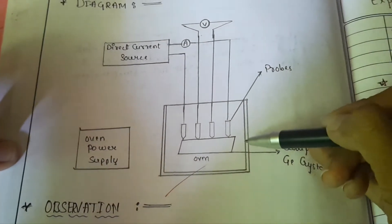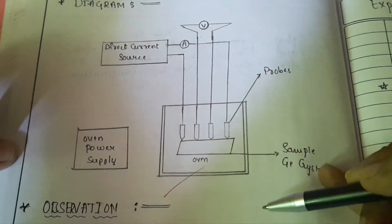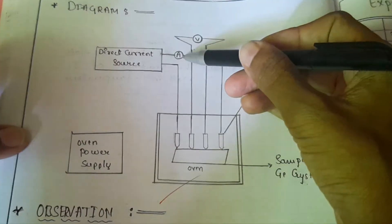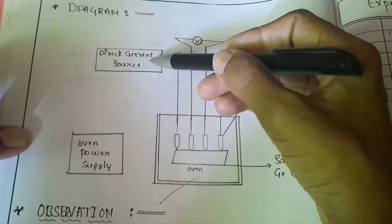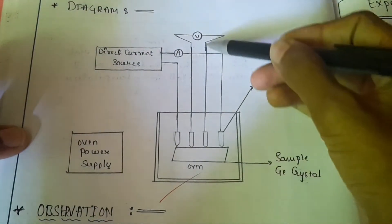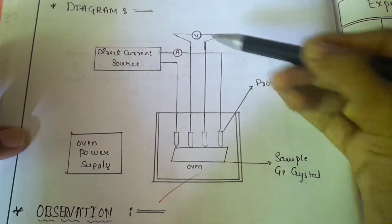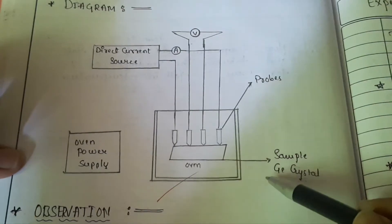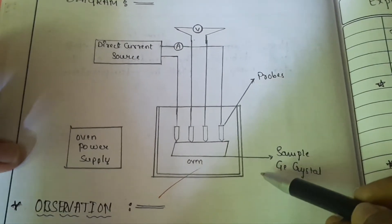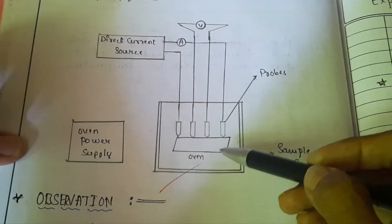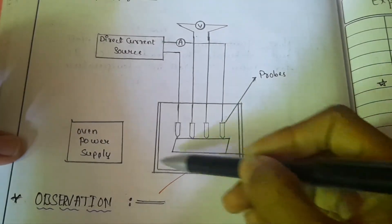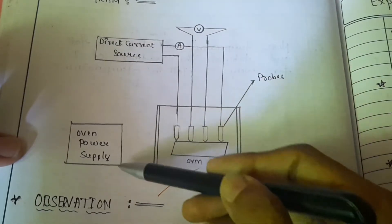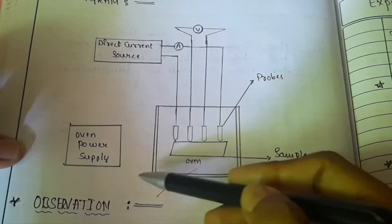This is the diagram for the 4-probe method. Here are the 4 probes. 2 probes are connected to ammeter, that is direct current source, and 2 probes are connected to the voltmeter. These 4 probes are attached to germanium sample which is a semiconducting material. This setup is kept inside the oven. The oven must be connected to the power supply, that is within the 4-probe setup.